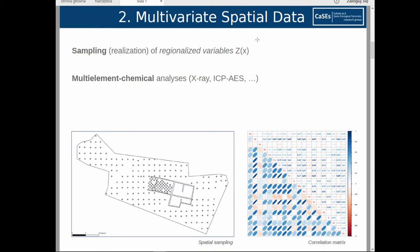The data that we can use for this kind of studies comes from a regular or semi-regular sampling, which can be carried out according to different strategies depending on the questions that we want to be addressing. On the other hand, the data is essentially multivariate and comes from laboratory analysis.